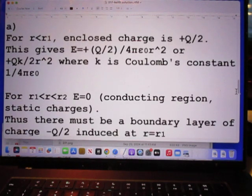And here is his answer to question A. For R smaller than R1, the enclosed charge is plus Q over 2. And so Gauss' law immediately gives you then the E field.